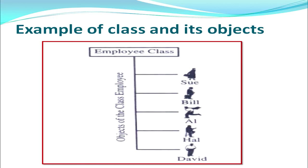This figure shows an example of a class 'employee' and the various objects created from that same class. All these objects are people working in an organization, all having common features like name, ID, address, date of joining, salary, and so on. In spite of the class being the same, each object has different values for those data members. The objects Bill, Sue, Hall, and others are all shown as various objects of class employee.